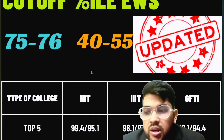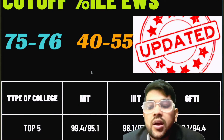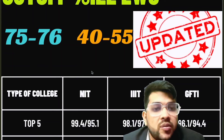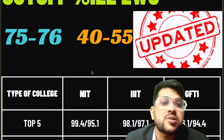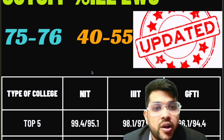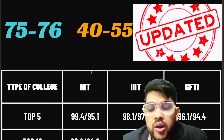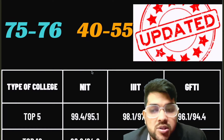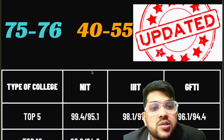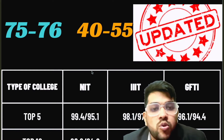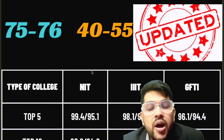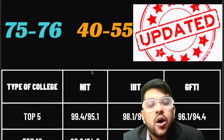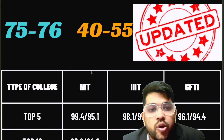Now let's talk about college-wise cutoff percentiles. The percentile remains the same in first and second attempts — only the marks required differ. For top 5 NITs: 99.4 percentile for CS, and 95.1 for lower branches. These figures are for male candidates from other states — home-state or female candidates can deduct about 0.1–0.2 percentile.